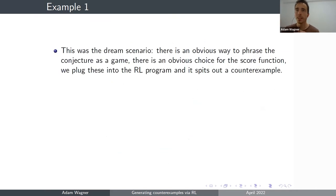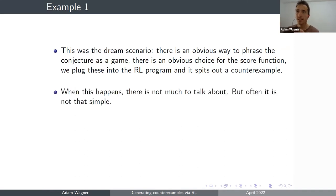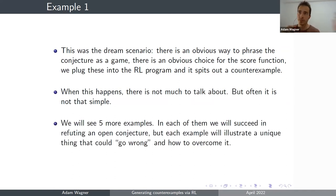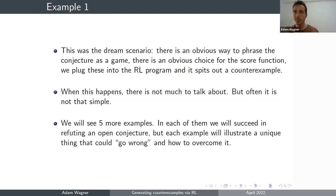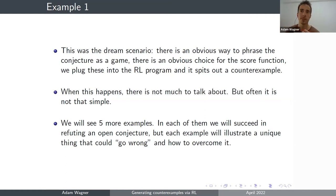This was a baby example where everything worked out perfectly — there was an obvious way to phrase the conjecture as a game, an obvious reward function, and it just worked. This does happen sometimes. But I want to tell you about what other things you can expect. I picked five examples, each illustrating something slightly different that you can encounter when applying this method. In four out of five we succeed in disproving an open conjecture, and each illustrates something slightly different about the method.